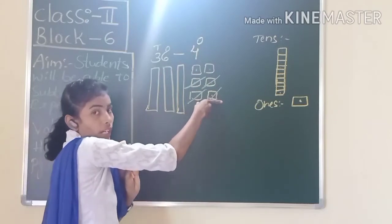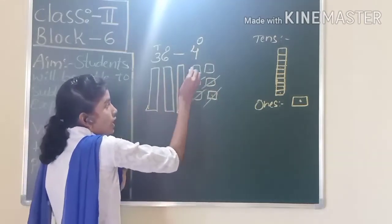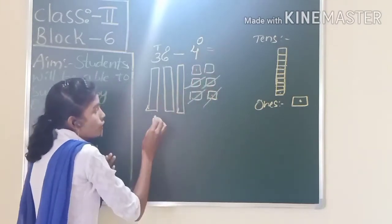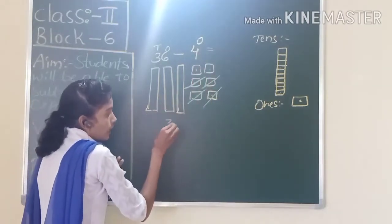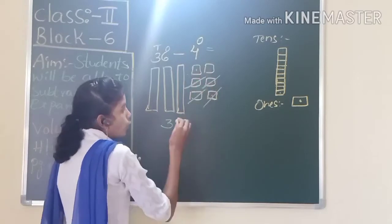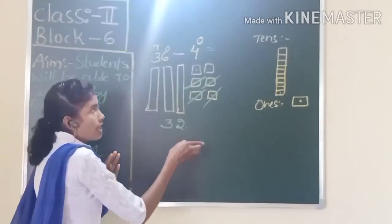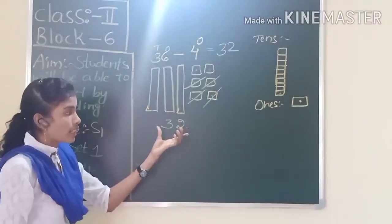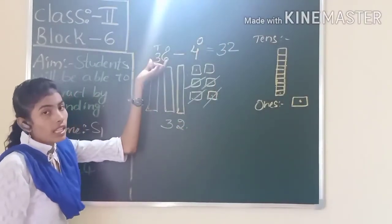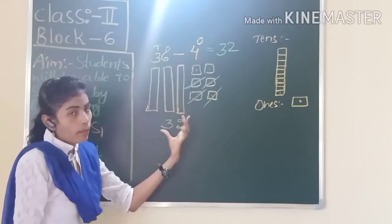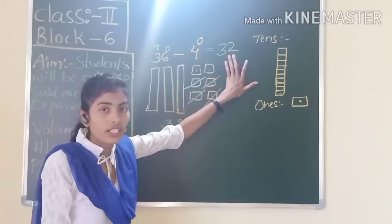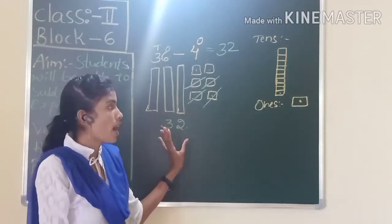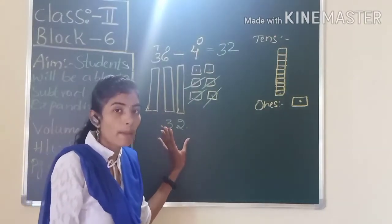So we have to remove four ones. And how many do we have now? What is left? Three tens towers and two ones cubes. So the answer is 32. When we subtract 36 minus 4 using place values, we got 32 as our answer. Have you understood how to use place value blocks to subtract?